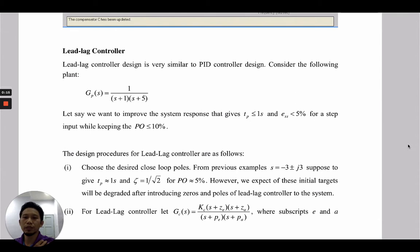We're going to do this example again. We have GP which equals 1 over (s+1)(s+5). We want to design the lead-lag controller, which is very similar to the PID controller design. Let's say we want to improve the system responses that give TP less than 1 second, steady-state error less than 5% for a step input while keeping the percent overshoot below 10%.